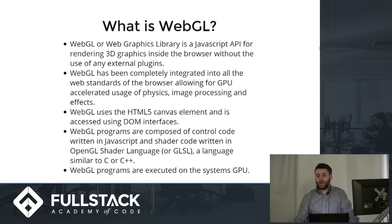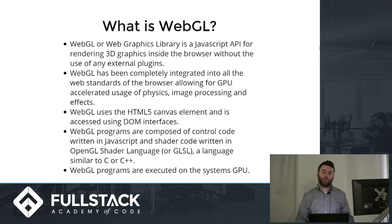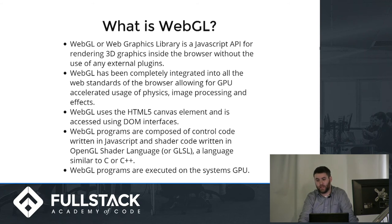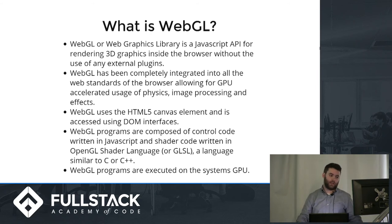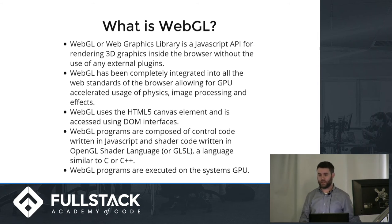WebGL, or the Web Graphics Library, is a JavaScript API for rendering 3D graphics without any external plugins — it can be executed natively in the browser. WebGL has been completely integrated into all modern browser web standards, allowing the GPU to accelerate image processing, physics calculations, visual effects, and any type of rendering that needs to be done.